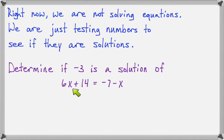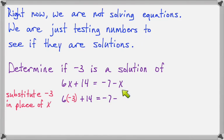So to find out, I have to substitute negative 3 in place of the x. And it will look like this: 6 times negative 3. See how negative 3 replaces the x? And see how I put it in parentheses? That helps me keep its sign next to it without getting mixed up about operations. So 6 times negative 3 plus 14 equals negative 7 minus...